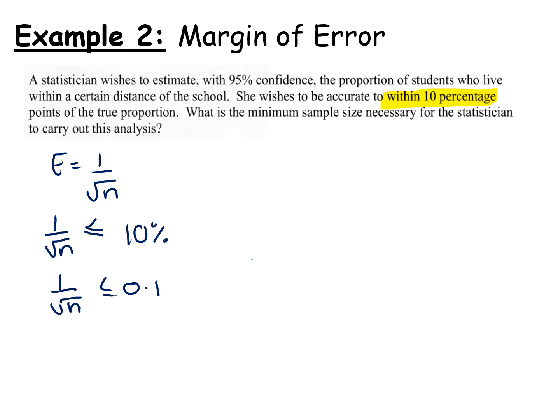Because where the complication with inequalities happen is where we're multiplying or dividing by a negative. So root n is definitely positive because we're going to have to take the positive square root of a positive number. So if I multiply both sides by root n, I get 1 is less than or equal to 0.1 root n. No issue.